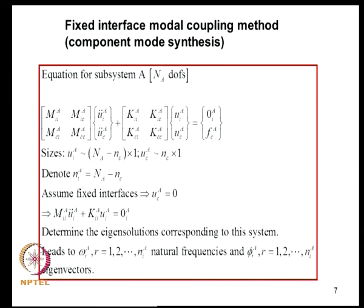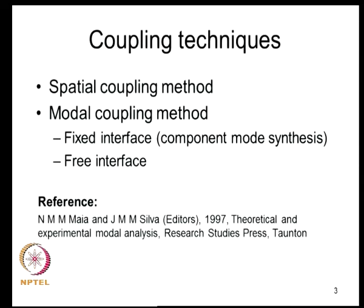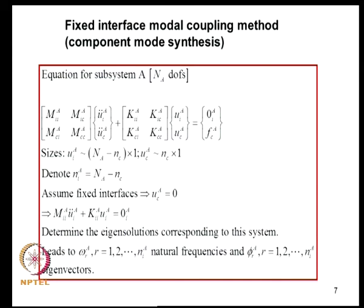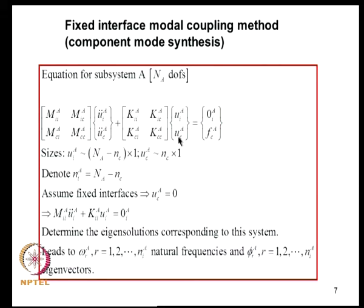We now come to the modal coupling method, starting with the fixed interface method, also known as component mode synthesis. We start with the equation for subsystem A, partitioning the degrees of freedom into interior and coupling degrees of freedom. We begin by assuming that at the interfaces the degrees of freedom are made zero—that means the structure is fixed at the coupling point. With UC = 0, the governing equation reduces to M_II^A * U_IA double-dot + K_II^A * U_IA = 0.